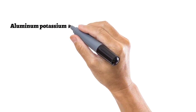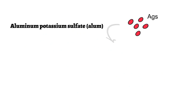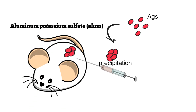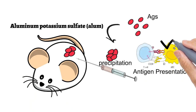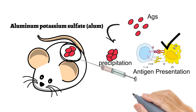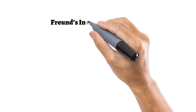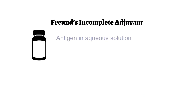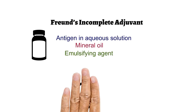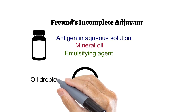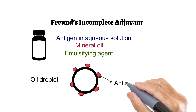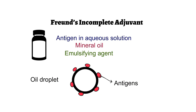For example, aluminum potassium sulphate, better known as alum, precipitates the antigen, and due to this the antigen is very slowly released from the site of injection. This increases the effective contact time and antigen presentation becomes more effective. Precipitation also increases the size of the antigen, which enhances the phagocytosis process. Freund's incomplete adjuvant contains antigen in aqueous solution, mineral oil, and an emulsifying agent such as mannide monooleate. Small droplets of oil are produced, surrounded by the antigen, and the antigen is again released very slowly from the site of injection.